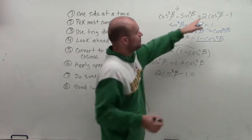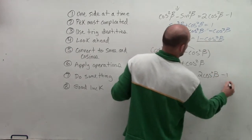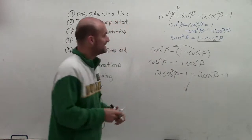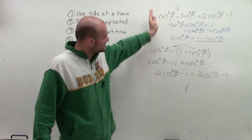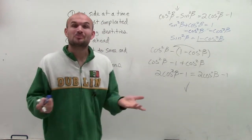And does that equal what's on my right side? Of course it does. 2 cosine squared of beta minus 1. So there you go, ladies and gentlemen. You can see I have now verified the identity. I picked one side. I looked ahead. I used my Pythagorean identities. I simplified it. And now I can verify. So there you go, ladies and gentlemen. Hope you enjoyed. Thanks.